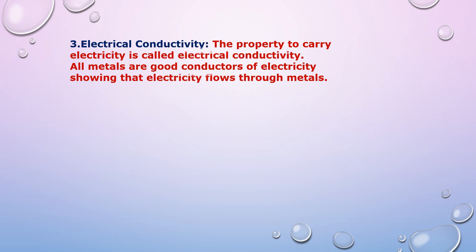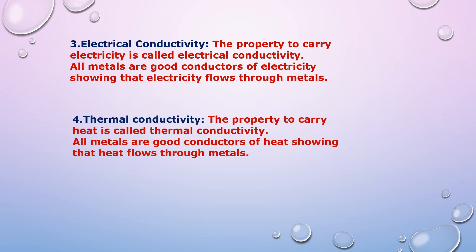The third property of metal is electrical conductivity. The property to carry electricity is called electrical conductivity — all metals are good conductors of electricity. The fourth property of metal is thermal conductivity. The property to carry heat is called thermal conductivity, and all metals are good conductors of heat.